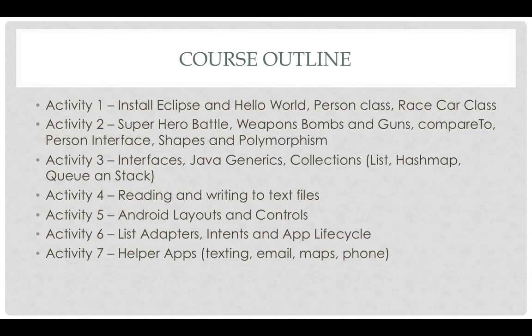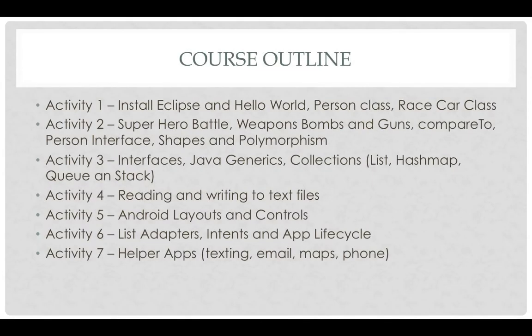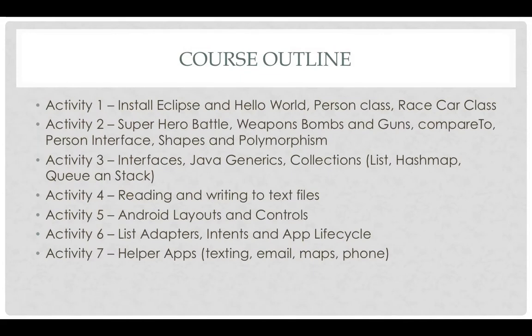Here's the course outline of what we're going to accomplish. There'll be 7 different activities and 7 different milestones along the way. In Activity 1, we will install Eclipse, get Hello World running, and get some classes working — an introduction to object-oriented programming. In Activity 2, we'll talk about inheritance and polymorphism, with activities called Superhero Battle, Weapons, Bombs and Guns, and an interface for the Person class. In Activity 3, we'll talk about generics and list collections in Java.